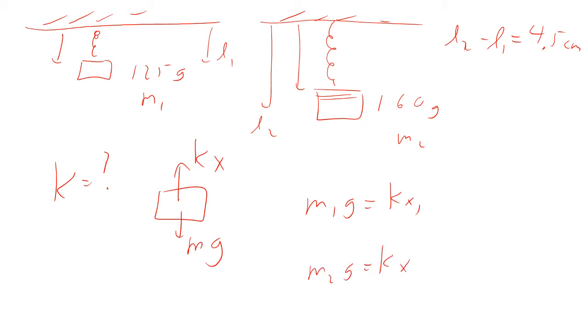M2g equals Kx2. Now, the problem is we don't know K, but we also don't know what the x's are. We don't know the x's because we don't know what the unstretched length of the string was. So you look at this and say, oh, gosh, we are in deep trouble.